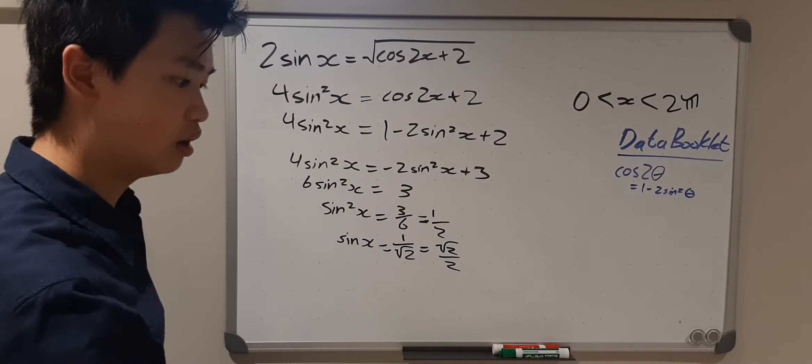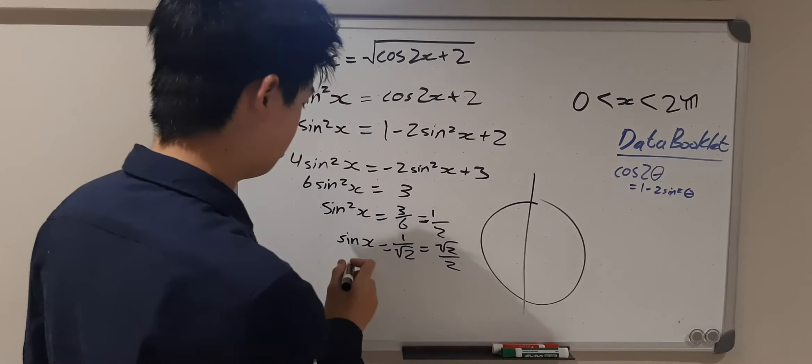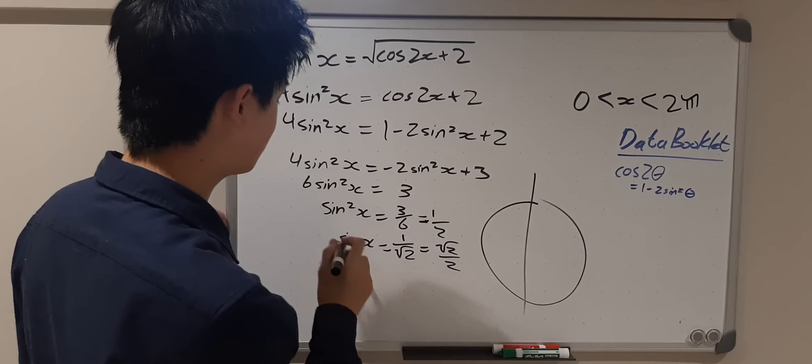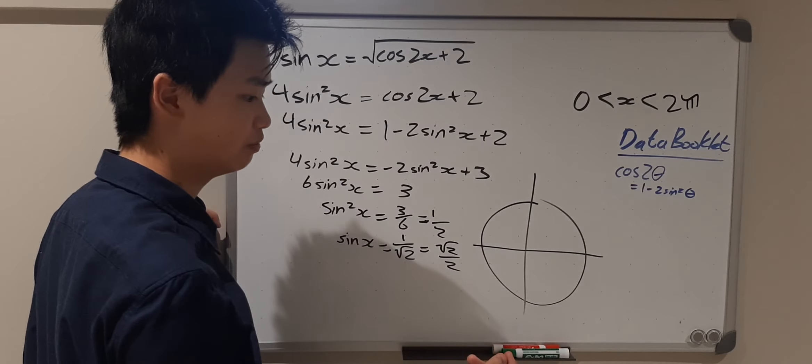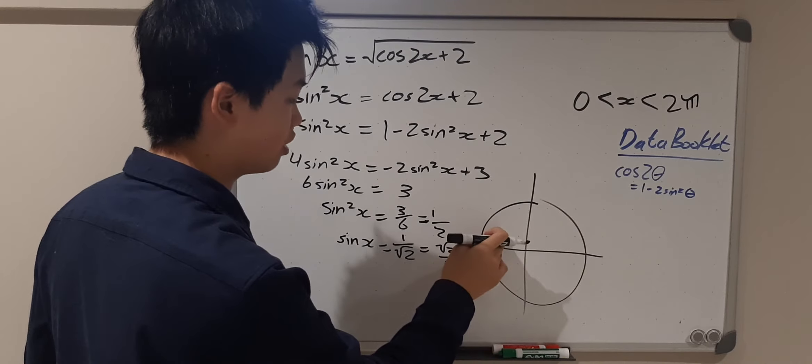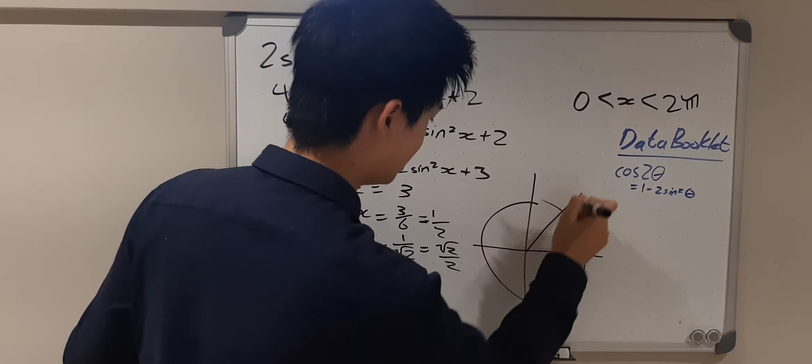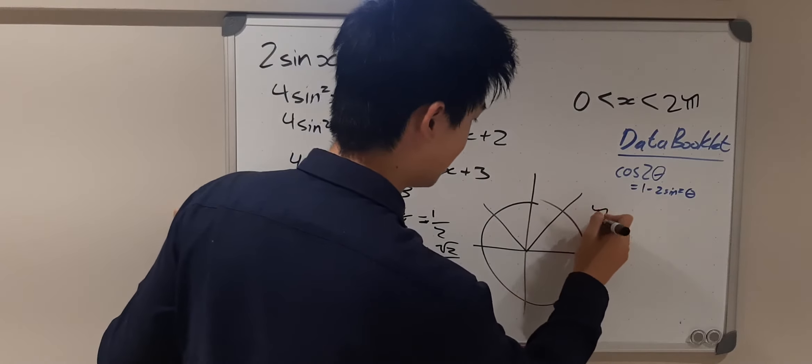and this is on the unit circle. So sine is positive in the first and second quadrants, so this appears here and here. This is π/4,